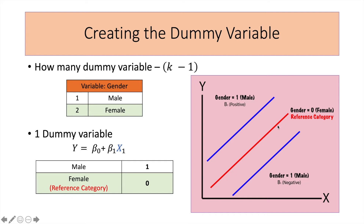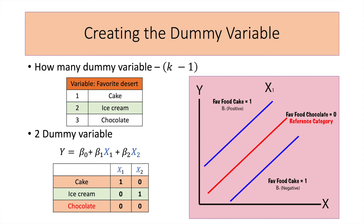The reference category is always the basis for comparison. For variables with more than two categories, consider the variable favorite dessert with three categories — three minus one gives us two dummy variables. So the model is: y equals beta zero plus beta one x one (dummy variable one) plus beta two x two (dummy variable two). Dummy variable one is for cake, where ice cream and chocolate are zero. Dummy variable two is for ice cream, where cake and chocolate are zero. In this case, chocolate is the reference category.